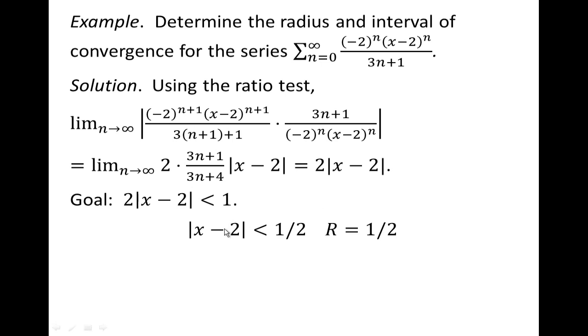What that means is I can stray 1 half of a unit from x equals 2, and I'll still be convergent. Now if we want to do some old time algebra, absolute value less than 1 half means that what's inside the absolute value, the x minus 2, will still be less than 1 half, but greater than the opposite of 1 half, which is negative 1 half.